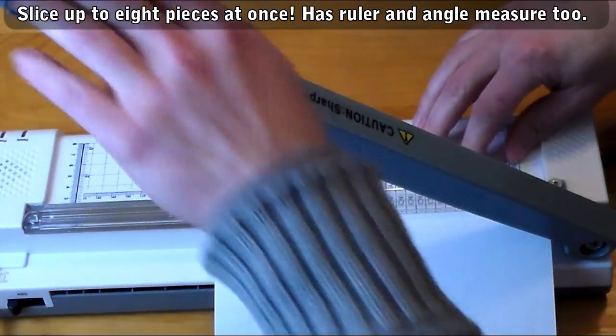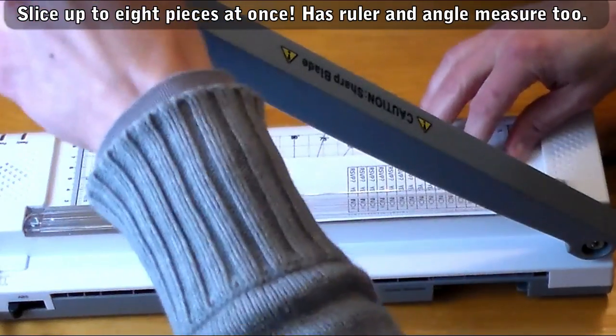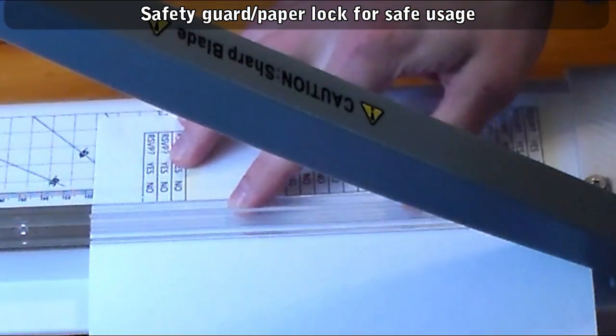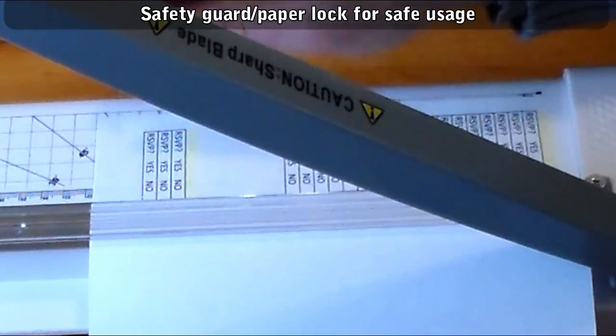The camera angle I have here might look like I'm being dangerous with this, but there's a safety guard that you push down on to hold the paper in place and it ensures your fingers are on the correct side of the blade and safe.